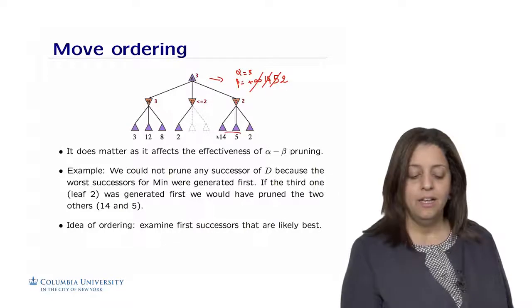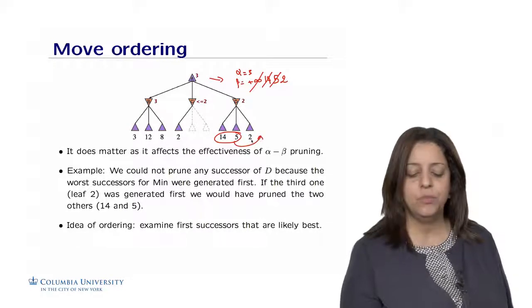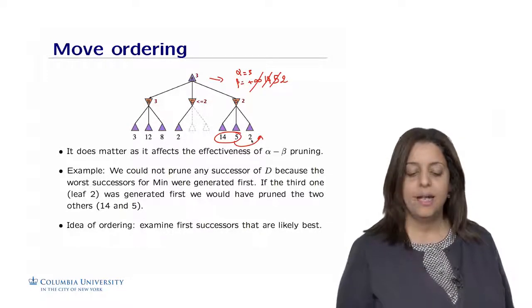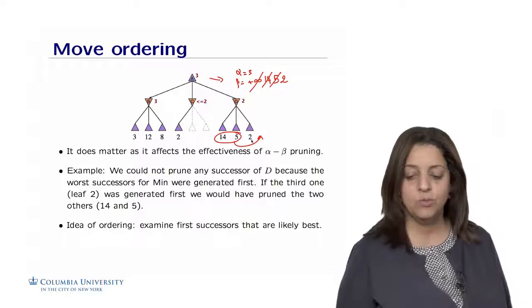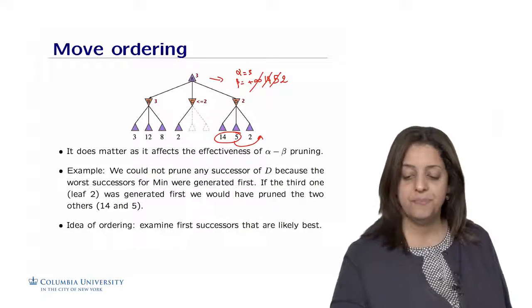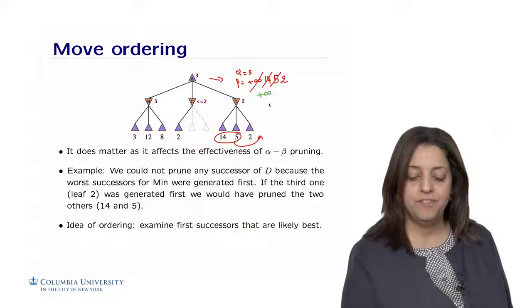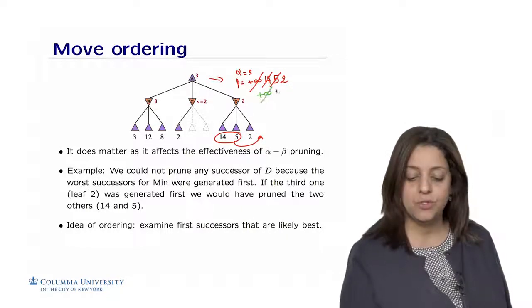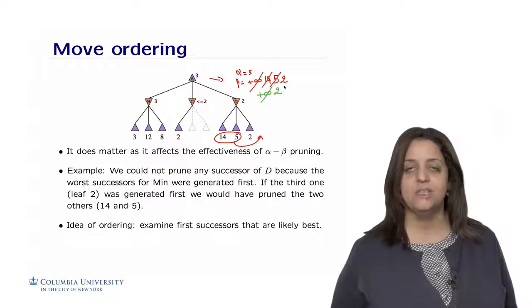So you could imagine that if we had 14 and 5 after 2, we could have simply avoided exploring 14 and 5. In this case, we could have started with the value of, so we had plus infinity. If we saw 2 first, we could have obtained, changed beta to 2.